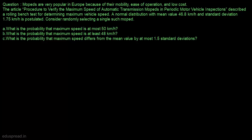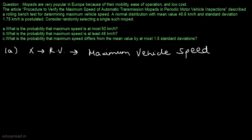In part A, we have to find the probability that maximum speed is at most 50 km per hour. First of all, let's say that x denotes the maximum vehicle speed. So x is a random variable and it denotes the maximum vehicle speed. We are given that x follows a normal distribution with mean value 46.8 and standard deviation 1.75.